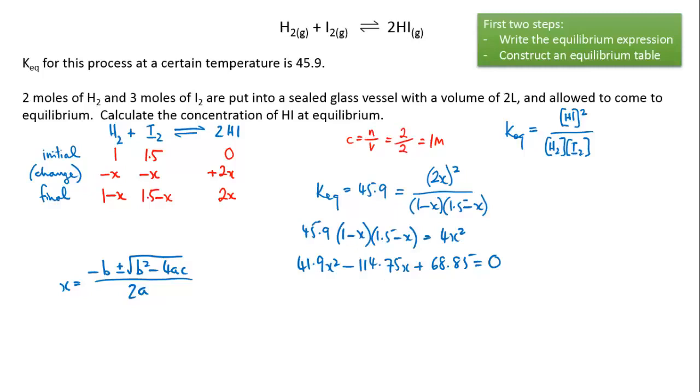So you plug those in and you solve it and what you will find is that x comes out with two values because of the plus or minus. The two x's that solve this equation are either x equals 0.89 or x equals 1.85.